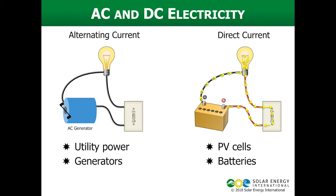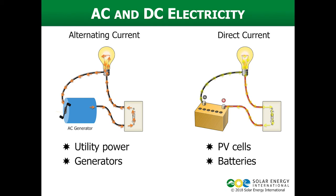Alternating current is generated by utilities — every utility generates alternating current. There are some high-voltage DC power lines in the world, but generation sources are generally going to be AC. You can also buy a generator off the shelf at Lowe's or Home Depot to generate AC. Direct current is what photovoltaic cells and batteries provide — batteries are always direct current. Without an inverter, you are not getting alternating current out of a PV cell or a battery.